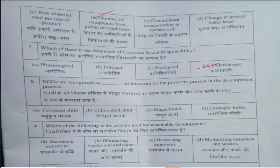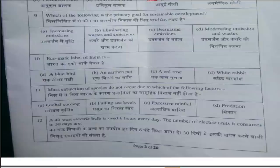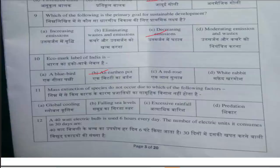Ninth question is: Which of the following is the Primary Goal for Sustainable Development? Answer is option C, Decreasing Emissions. Tenth question is: Eco Mark Label of India is? Answer is option B, Anarthen Port. Eleventh question is: Mass Extinction of Species does not occur due to which of the following factors? This answer is option D, Predation. Predation gives you extinction, not mass extinction.